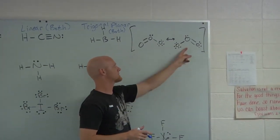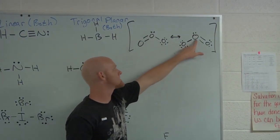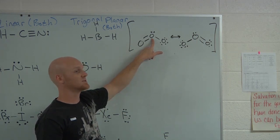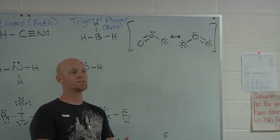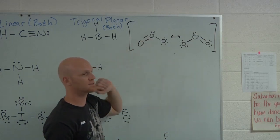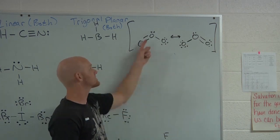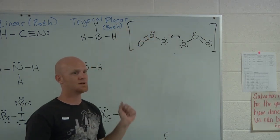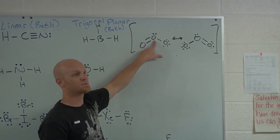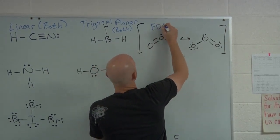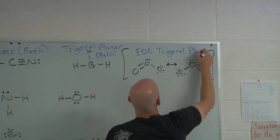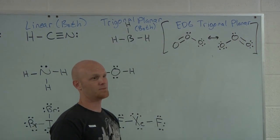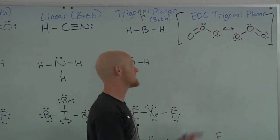Ozone is represented by two resonance structures. Looking at the central atom, the lone pair counts as a direction of electrons. An electron domain is either an atom you're bonded to (bonding domain) or a lone pair (non-bonding domain). With two bonding domains and one lone pair, there are three total domains, so the electron domain geometry is still trigonal planar. However, if any domain is non-bonding, the molecular geometry will not have the same name.